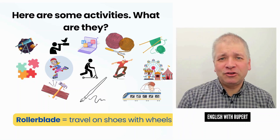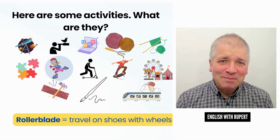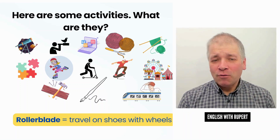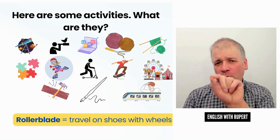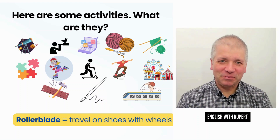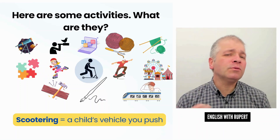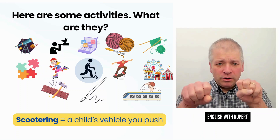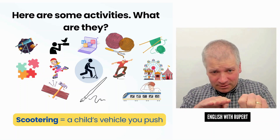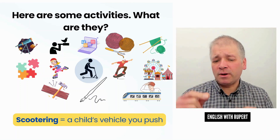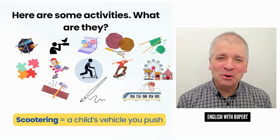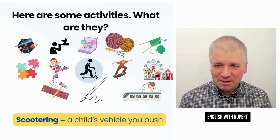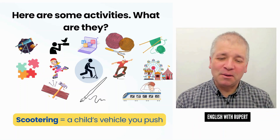Here are some activities that children enjoy. First, using rollerblades or rollerblading — this is when you travel on shoes with wheels. Rollerblading is when the wheels are under the shoe and they're all in a line together. Another popular activity for a young child is scootering. This involves using a scooter: you hold handlebars, you stand on something flat at the bottom, and it usually has two or maybe three wheels. It's a child's vehicle — something that moves on wheels and is pushed by the child.